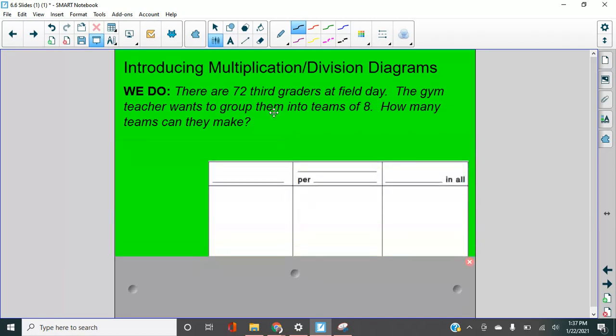All right. So we have teams and third graders. Okay. Let me use our point here. So our groups in the last problems, it was groups, but in this problem, it's going to be teams. Number of teams is going to go here. Do we know the number of teams? We do not, right? We don't know the number of teams. In fact, the question says, how many teams can they make? We don't know the number of teams.